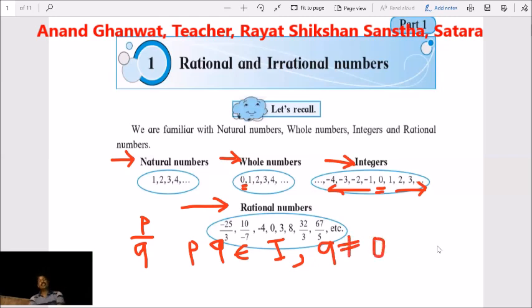Then every number written in the form P upon Q are called rational numbers. So, this is the introduction or review of the previous knowledge.